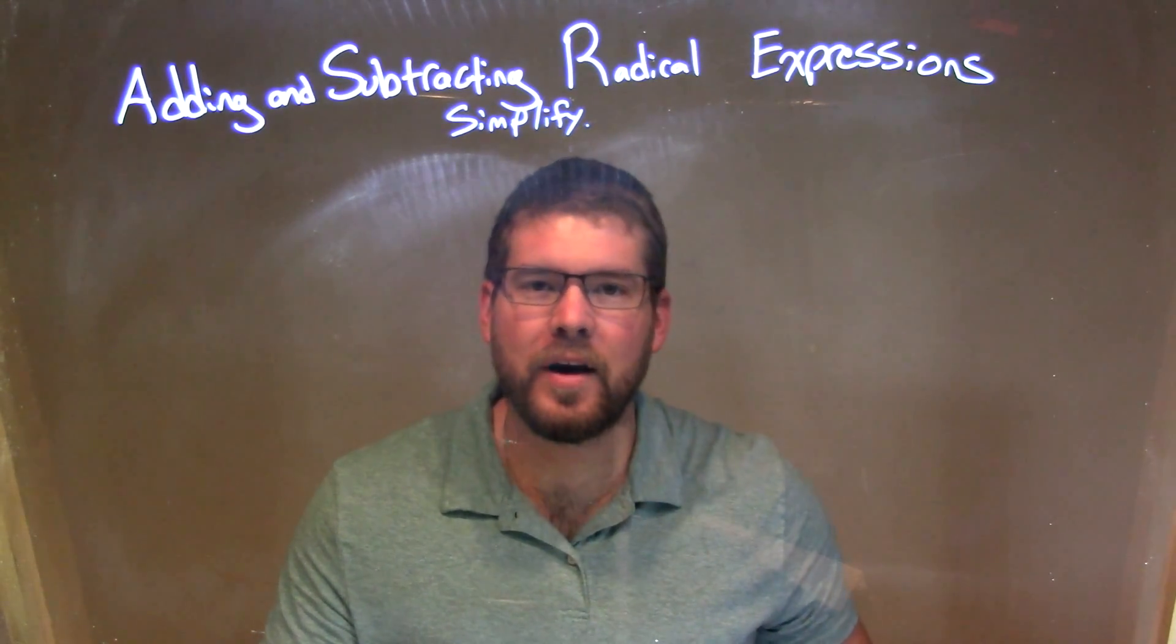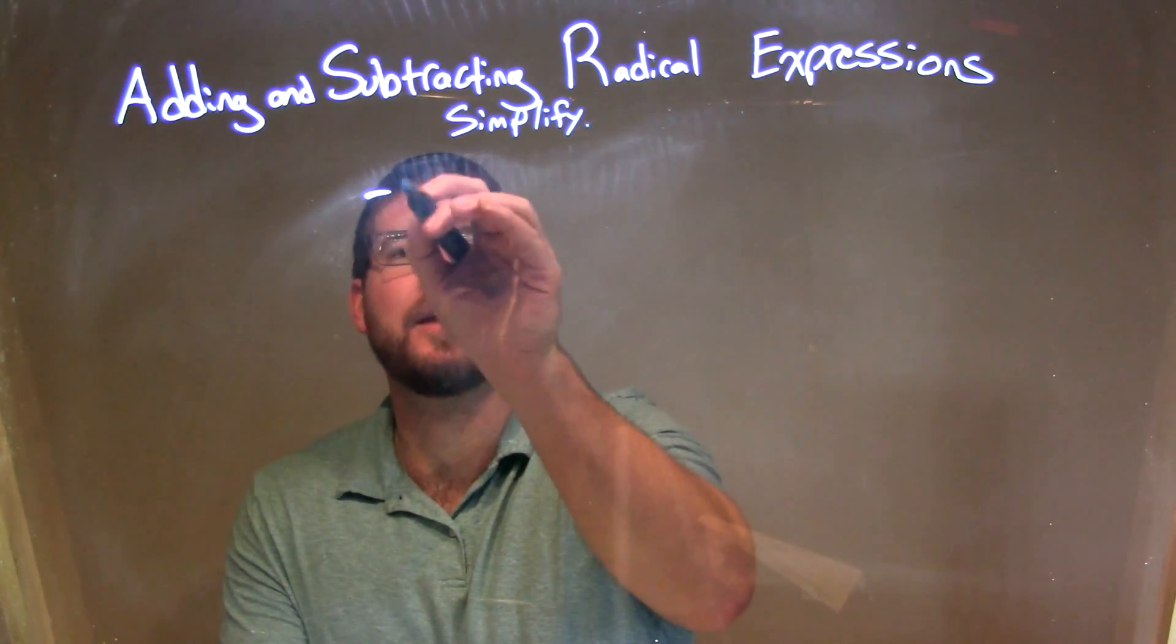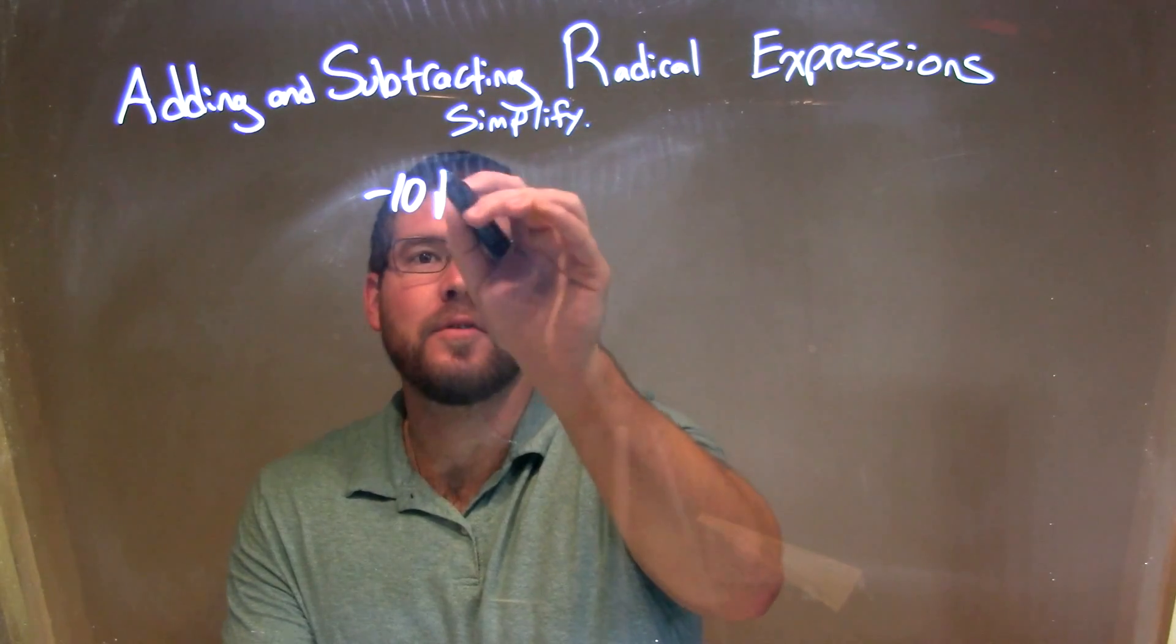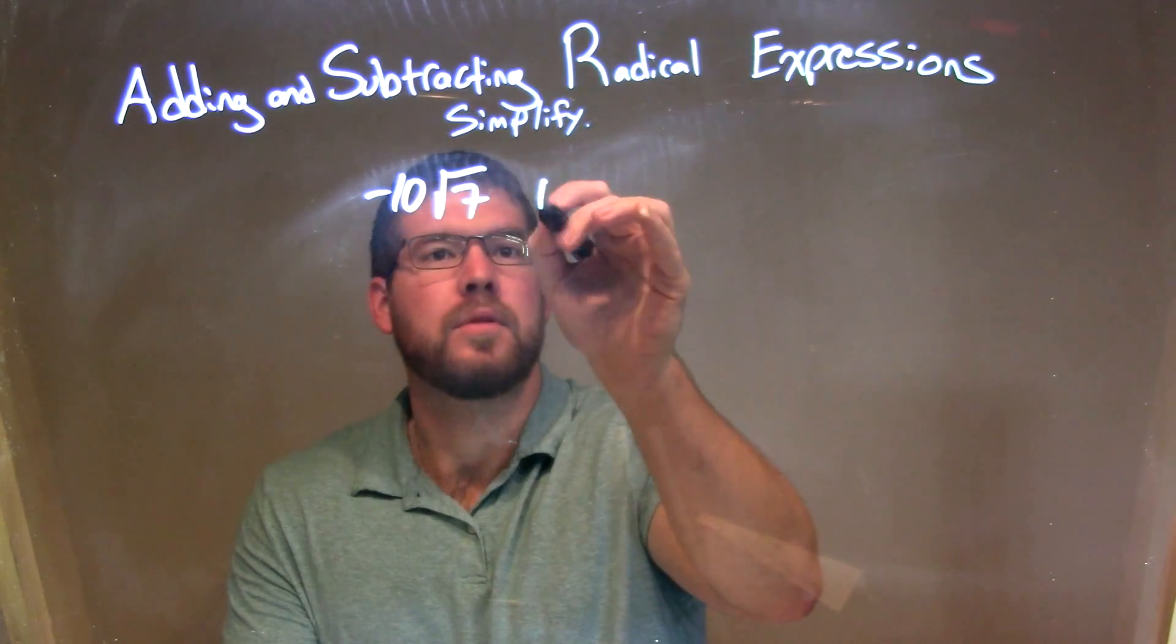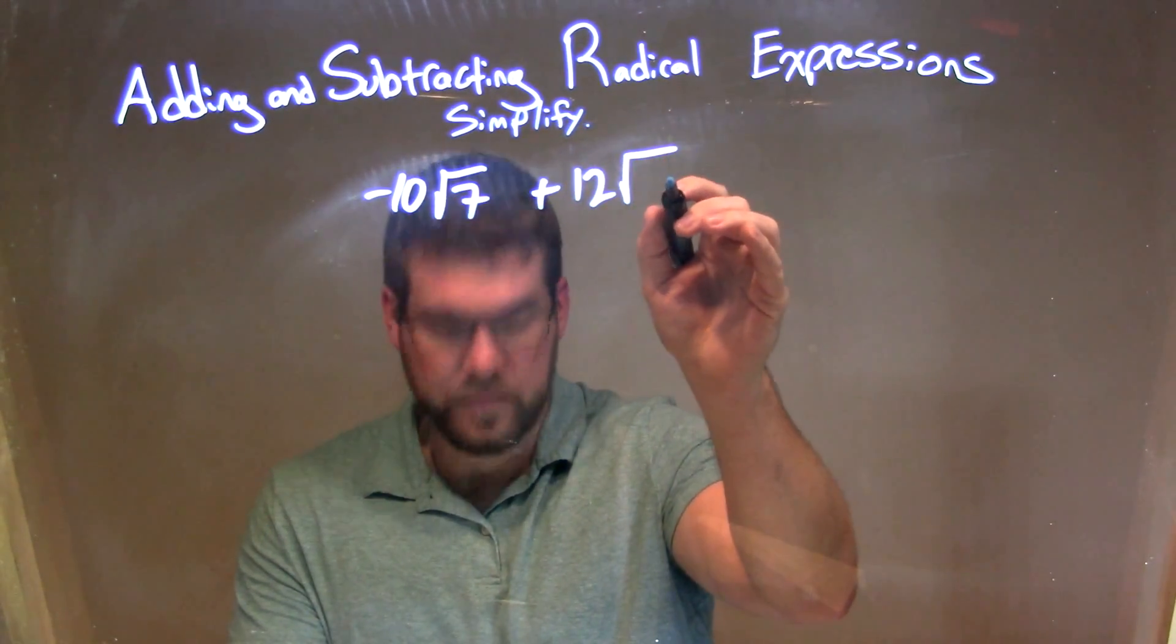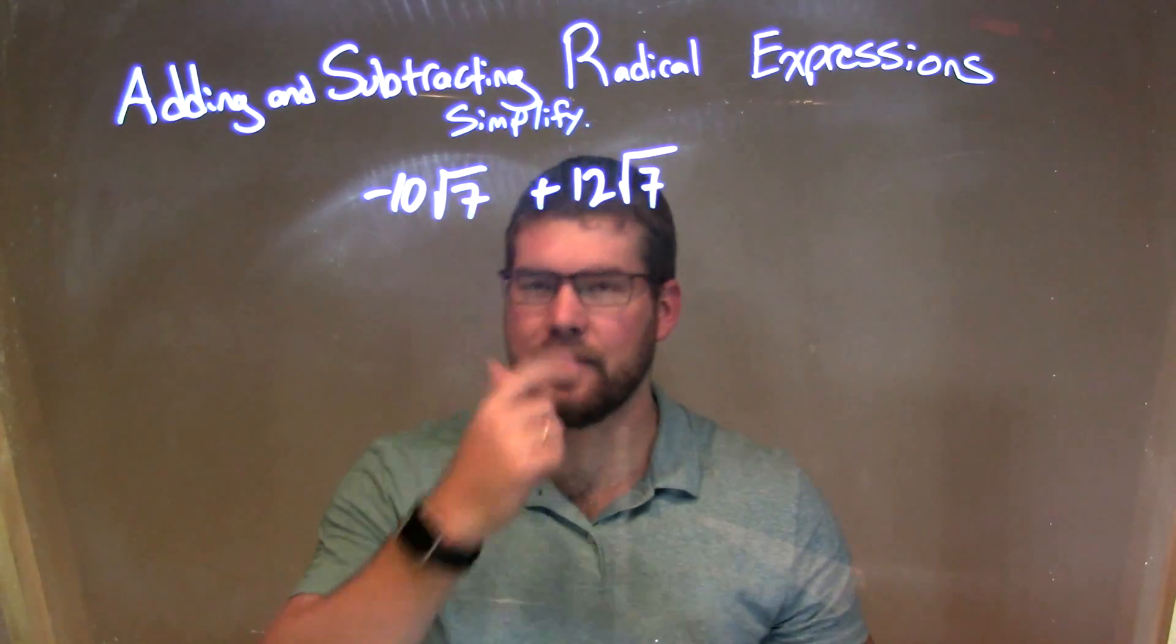So if I was told to simplify this problem, negative 10 times the square root of 7 plus 12 times the square root of 7, well,